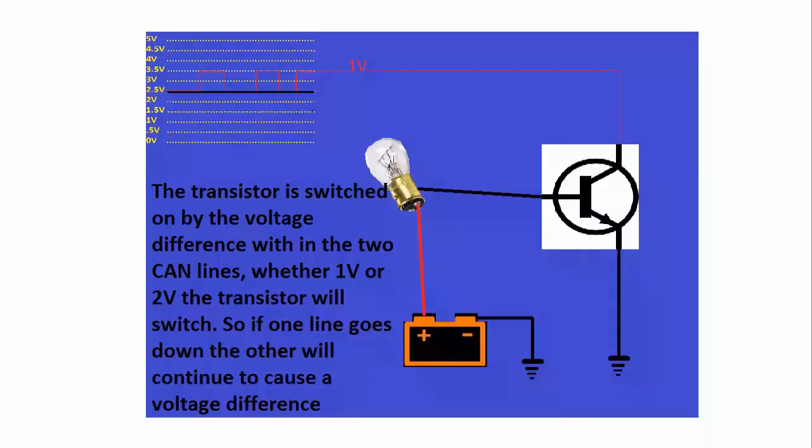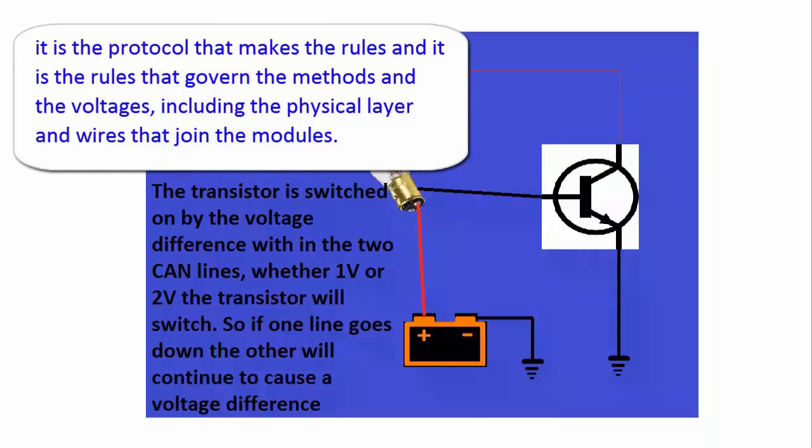So, in reality, the CAN high speed protocol is still using the same binary language that we have been talking about. But it is the protocol that makes the rules. And it is the rules that govern the methods of the voltages, including the physical layer and the wiring that joins the modules.